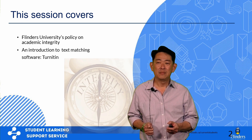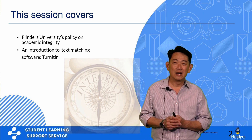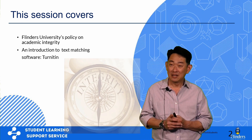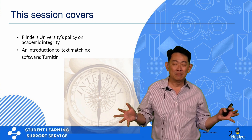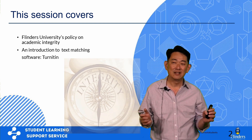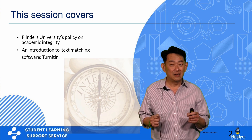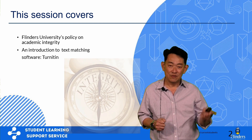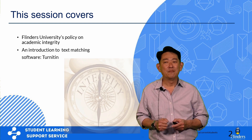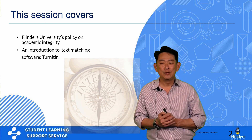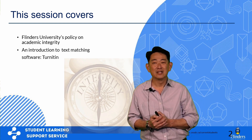Specifically, we're going to talk about Clintus University's policy about academic integrity. We're not going to cover this in depth, but sufficient for you to have an understanding of what it's all about and sufficient for you to explore further if you want to. And then I'm going to introduce you to the text matching software called Turnitin.